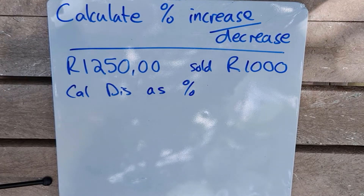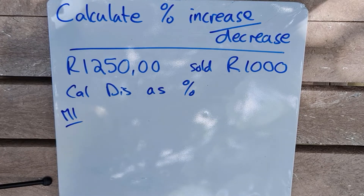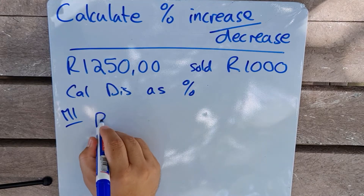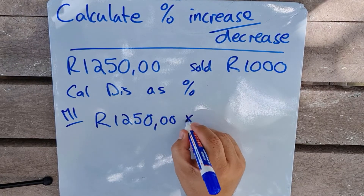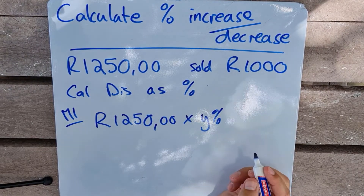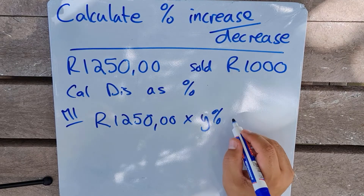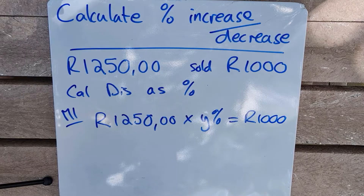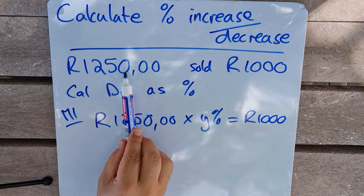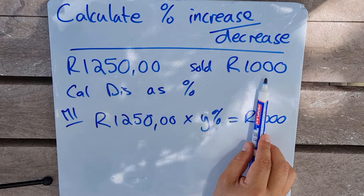With Method 1, we are going to create an equation. We say 1250 multiplied by y percent — because we don't know what that percentage is — must equal 1000 Rand. The item previously cost 1250 Rand but was sold for 1000 Rand, so it went down and we need to calculate that discount.